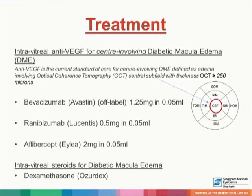Intravitreal anti-VEGF treatment is mainly used for patients with center-involving diabetic macular edema. It is the current standard of care for center-involving DME, defined as edema involving the optical coherence tomography central subfield — an area of 500 microns centered at the fovea with thickness of more than or equal to 250 microns. Three medications are currently available: bevacizumab (Avastin, off-label), ranibizumab (Lucentis), and aflibercept (Eylea). Other options include intravitreal steroids for diabetic macular edema, such as dexamethasone, otherwise known as Ozurdex.